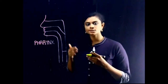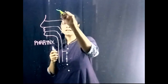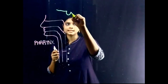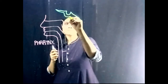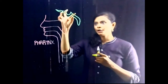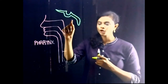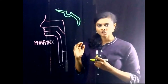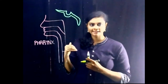Coming to the boundaries of Pharynx, superiorly it is bounded by the base of the skull — which is the body of the sphenoid, posterior surface of the body of the sphenoid, and the base of the occiput. These are the structures which form the superior boundary of the Pharynx.